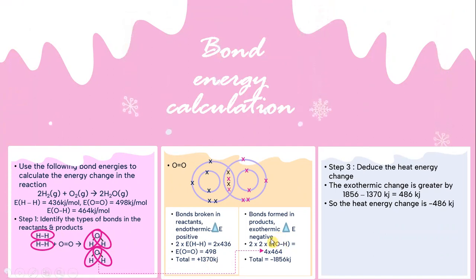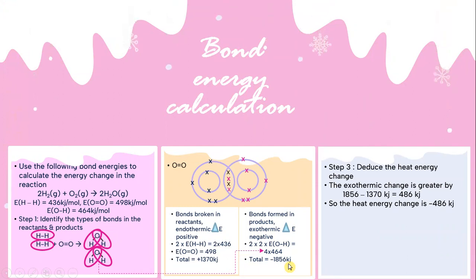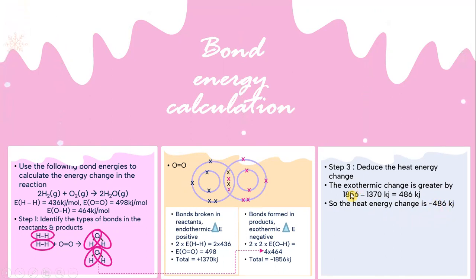Bond formation in products is exothermic, so the energy change value is negative. For H₂O, there are 4 O–H bonds, so the total is −1,856 kJ. In step 3, deduce the heat energy change: −1,856 minus (−1,370) = −486 kJ. So the heat energy change is −486 kJ. The negative value confirms this is an exothermic reaction.